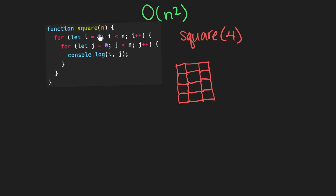Now i equals three and j resets to zero — draw a square. j equals one, j equals two, j equals three — draw squares. Then j equals four, so we stop the nested loop. At this point i becomes four, and our n is also four. We only iterate through the outer for loop as long as i is less than n, but now i equals n, so we stop.